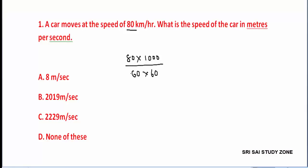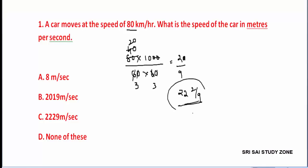So speed is 80 into 1000 divided by 3600. Two zeros cancel, leaving 80 by 36. Then 4 cancels: 2 into 40 divided by 2 into 18, giving 20 by 9. Further simplification gives 200 by 9, which equals 22 and 2 by 9 meters per second. So option C is our answer.